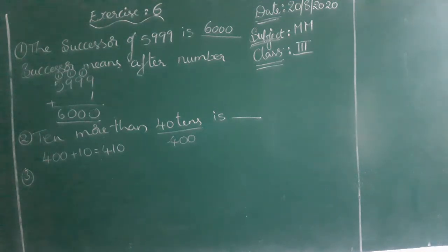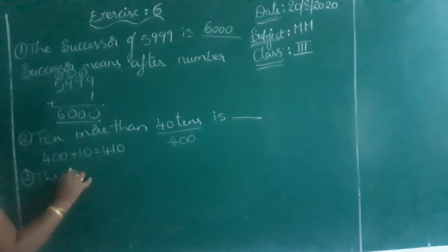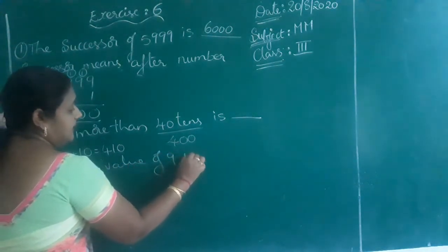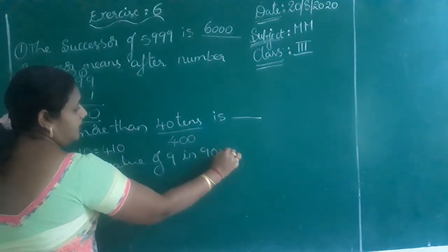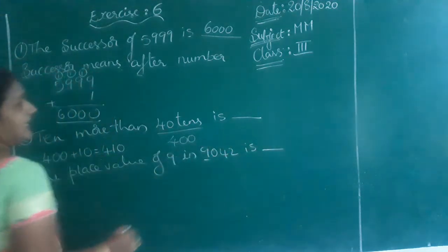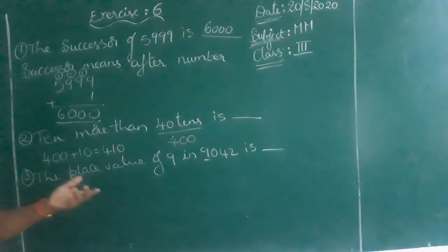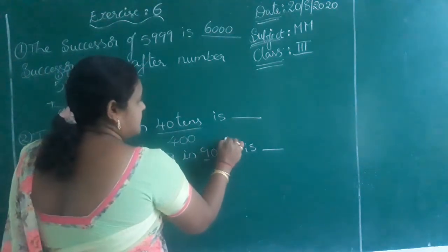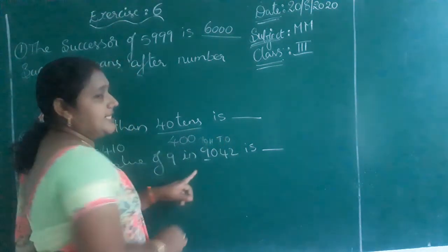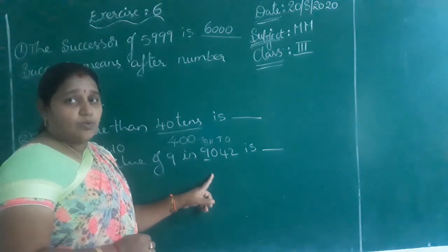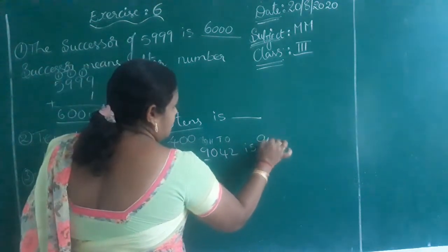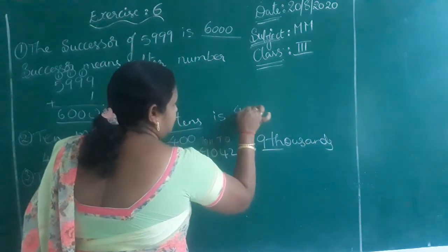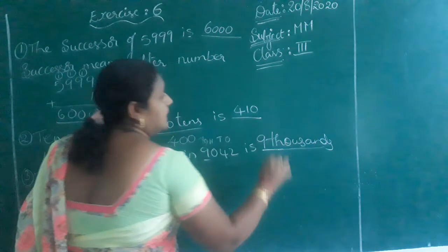Third one: the place value of 9 in 9000. If you write the place value from the number you will get it. The place values are ones, tens, hundreds, thousands. So 9 is at the thousands place. Therefore the place value of 9 is 9000.